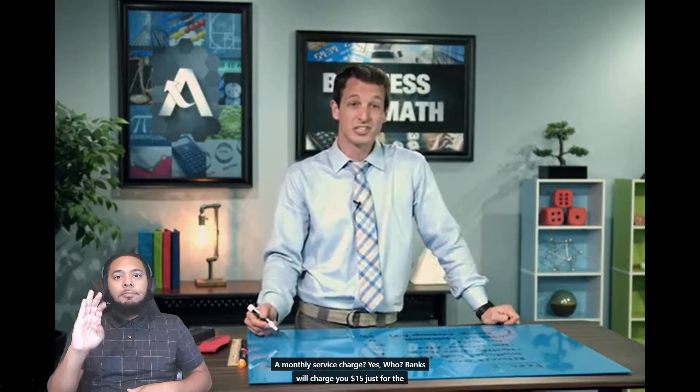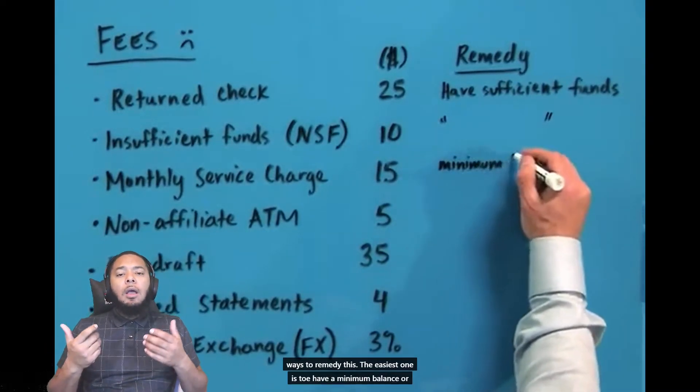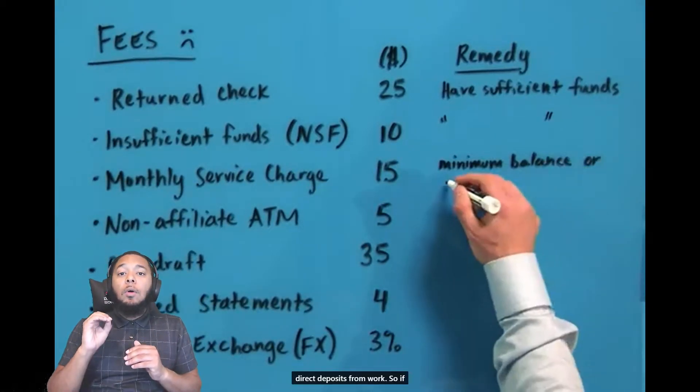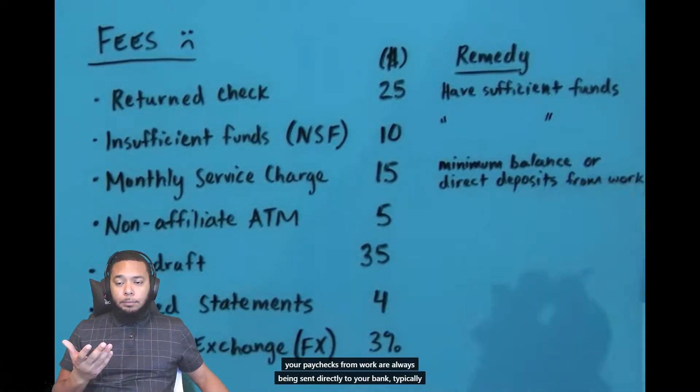A monthly service charge — banks will charge you $15 just for the pleasure of having a bank account with them. But they offer remedies: the easiest is to maintain a minimum balance or have direct deposits from work. If your paychecks are always sent directly to your bank, typically they'll waive this $15 fee. Over a year, $15 is $180 — you don't want to pay a bank $180 just for saying you can bank here. Maintain direct deposits or the required minimum balance, which can be as high as $1,500. It's much easier just to have direct deposits.